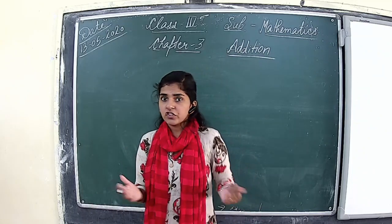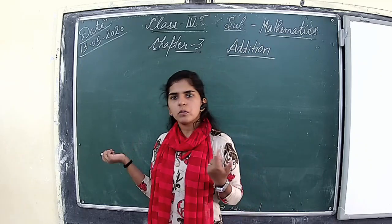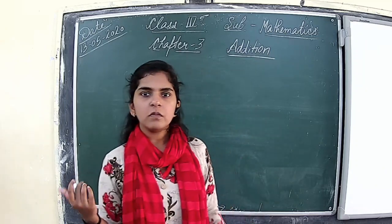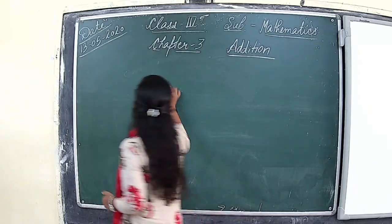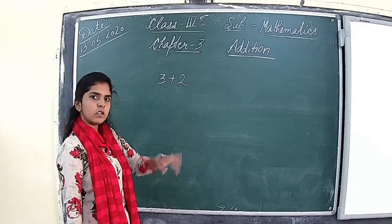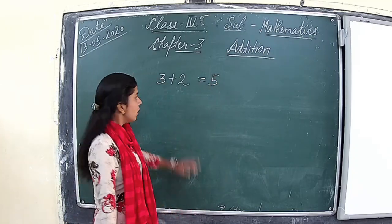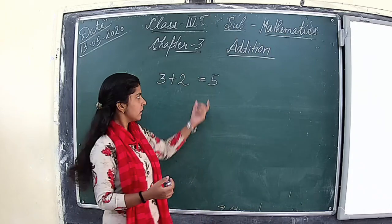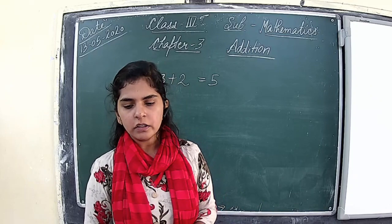So what is the meaning of Addition? Addition means combining two numbers. In Maths we talk about only numbers. So when I combine two numbers, that is 3 and 2, I will get another number — I will get 5. So these two numbers are called Addends, and this resulting number will be called Sum. The result of Addition is called Sum.